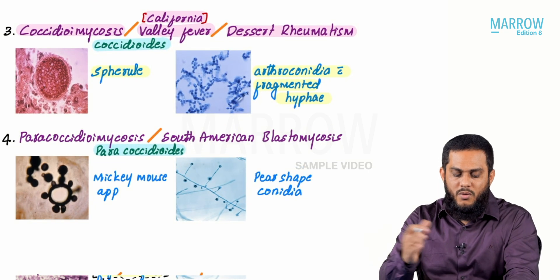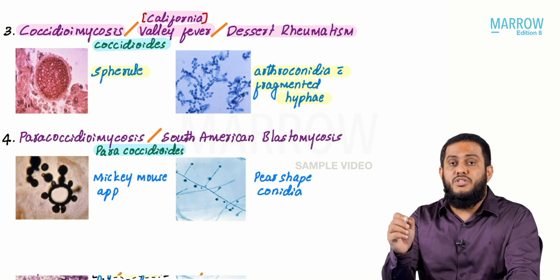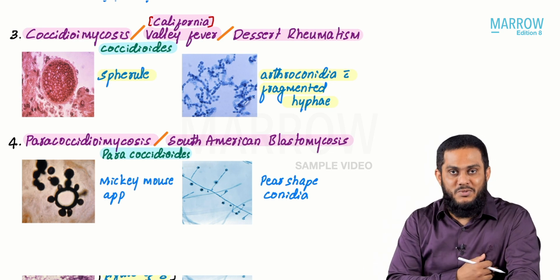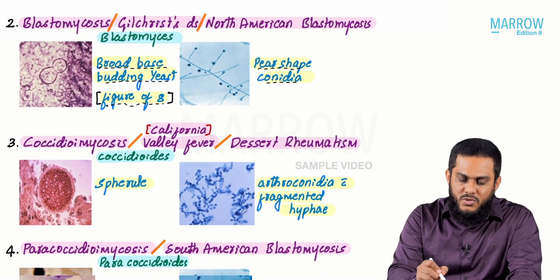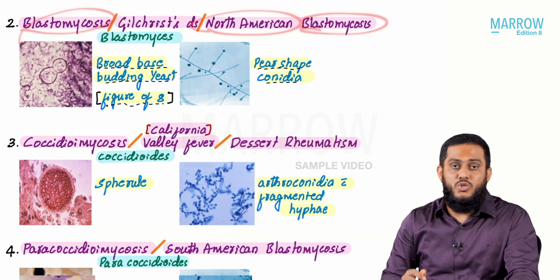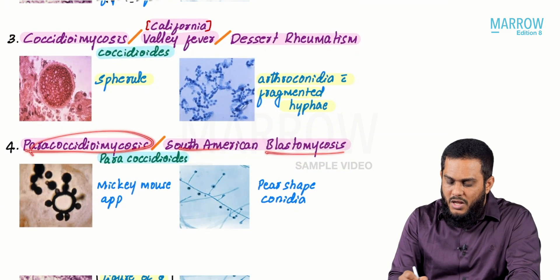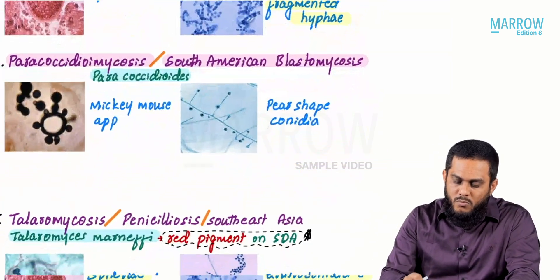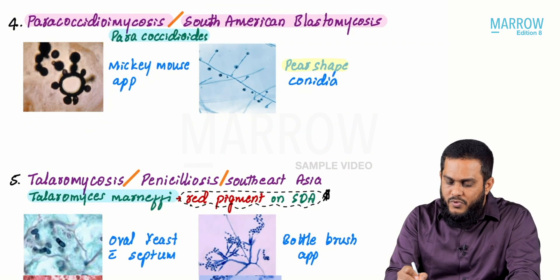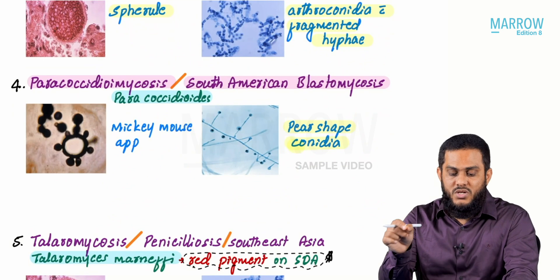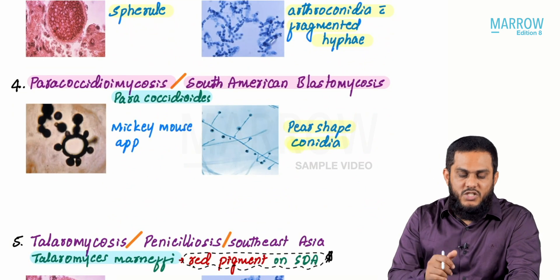Paracoccidioides causes pneumonia known as paracoccidioidomycosis, also called South American blastomycosis because it is most commonly found in South America. It is called blastomycosis because in the mold form, Paracoccidioides shows pear-shaped conidia — exactly like the mold form of Blastomyces.